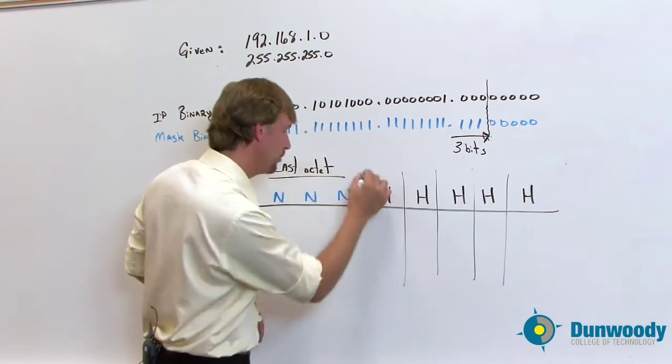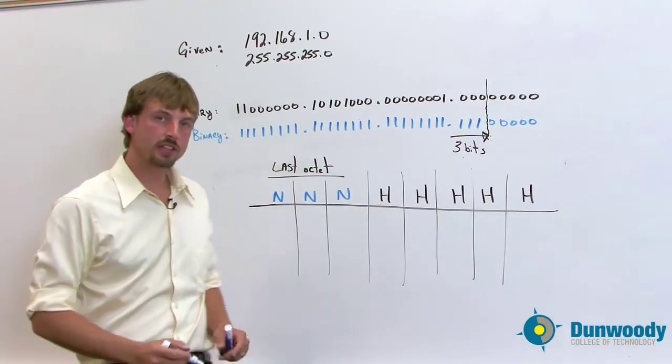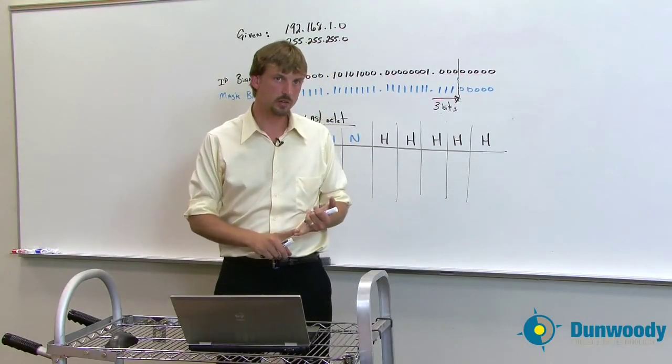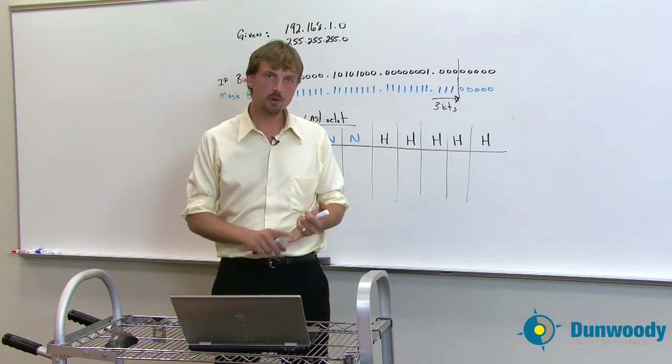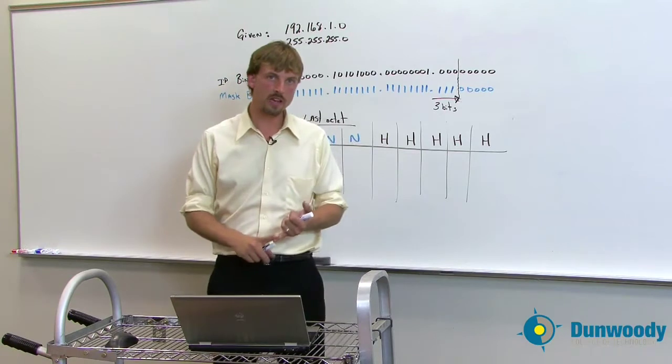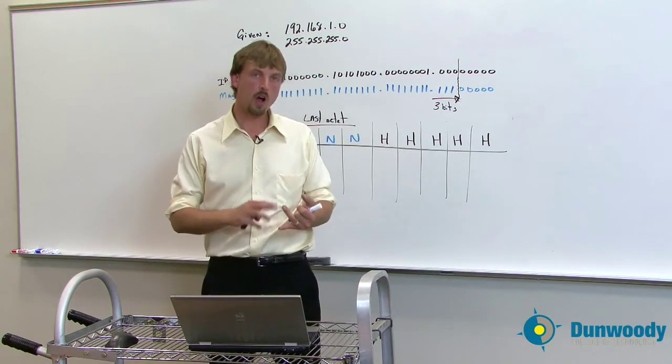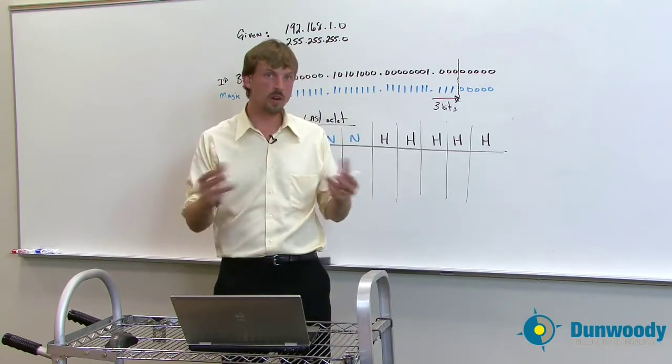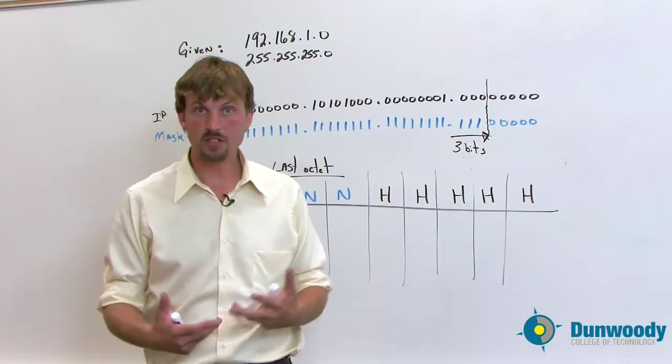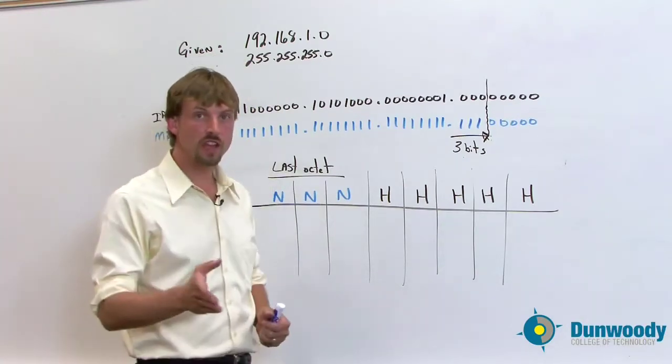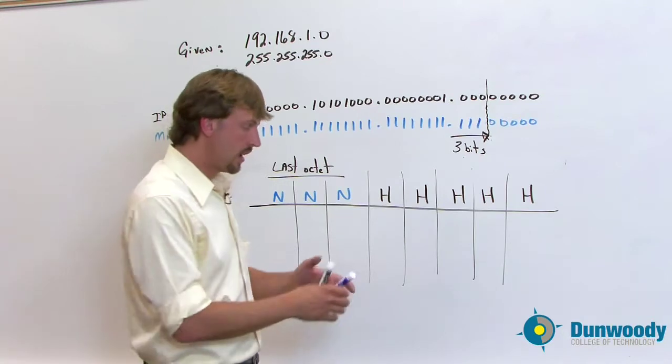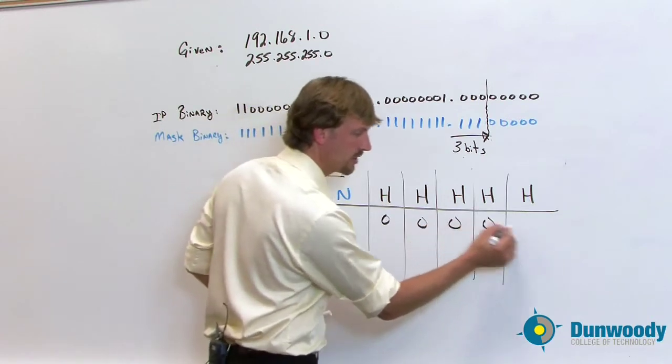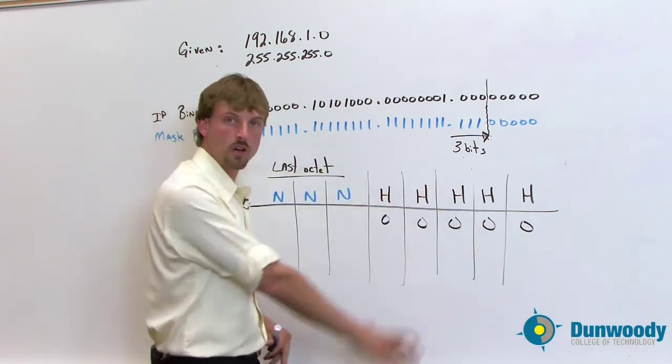So we had a couple of rules in there in the last section that I told you about. And just to refresh your memory, all zeros in the host section will indicate a network ID. That's what we're going to figure out first, is the network ID area. And then all ones in the host section indicate the broadcast ID. And we'll figure that out. And then whatever's left in between is going to be the range of valid IP addresses that we can use. So first step, determine the network IDs. And again, looking at that rule, all zeros in the host section, that's right here. We know this host section, so we're going to just put zeros, and this is going to go all the way through.